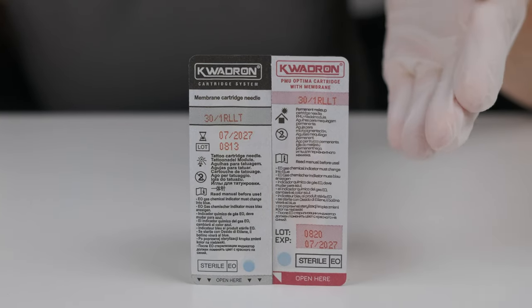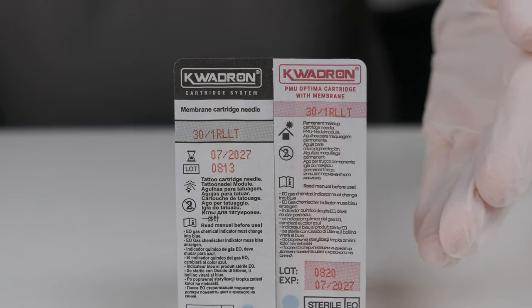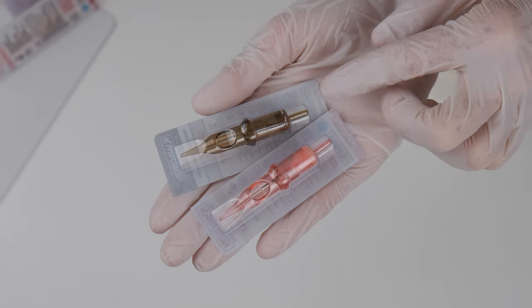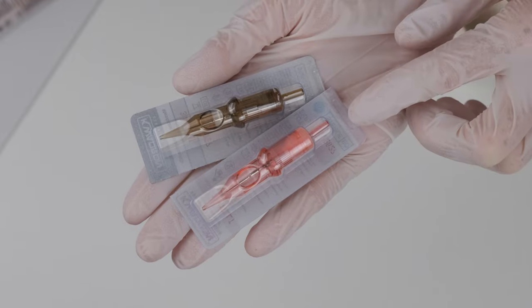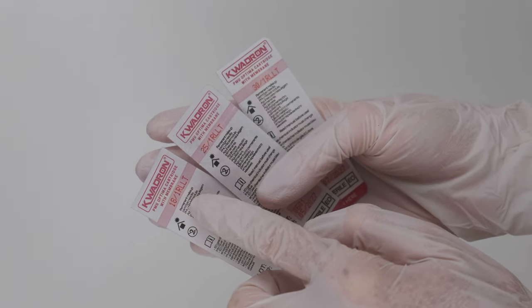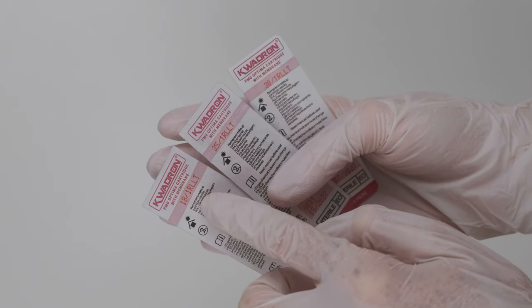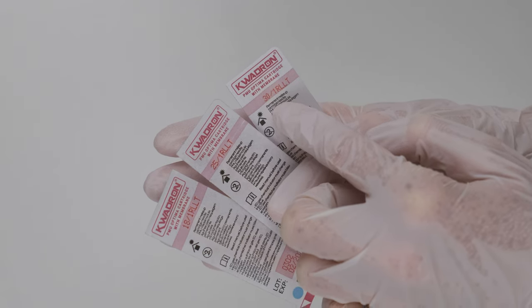Maybe you didn't know but Quadron has needles for permanent makeup, Quadron Optima, and also for tattooing. Most of the time I really like to use this brown needle but sometimes I also change for pinkish needle. 0.18 you can use for outline and 0.25 or 0.30 you can use for shading.